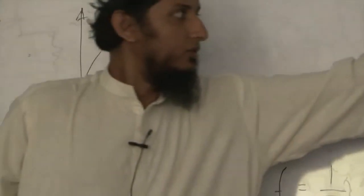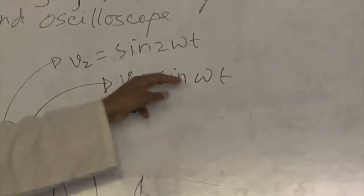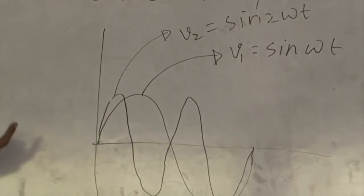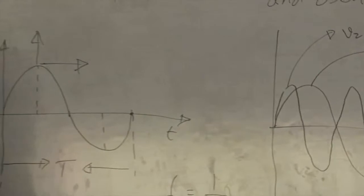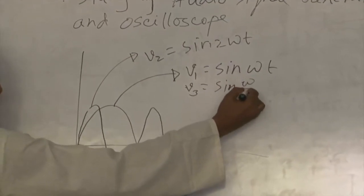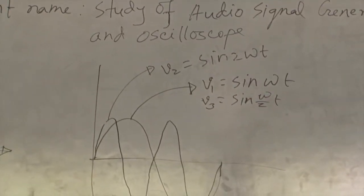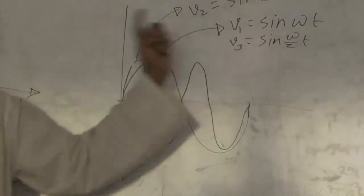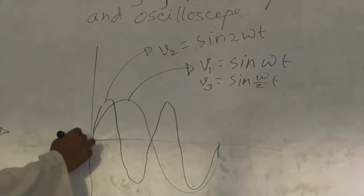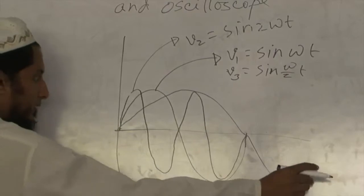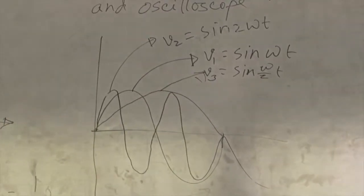Now, when omega is made omega by 2, the frequency is halved. When it is 2 omega, the half cycle is complete sooner. Now with omega by 2 t, we get V3 sin(omega/2 · t). So, V1 sin(omega t) gives a full cycle, while omega by 2 gives only a half cycle. This means the amplitude V3 varies.